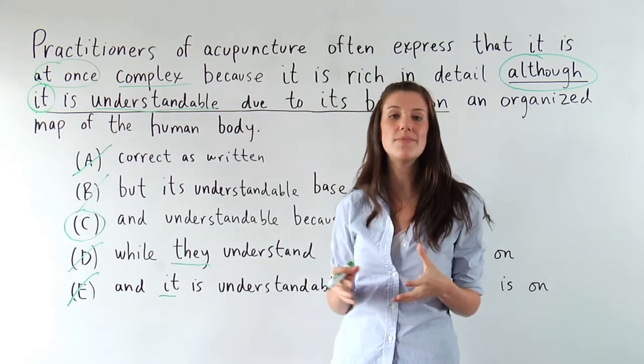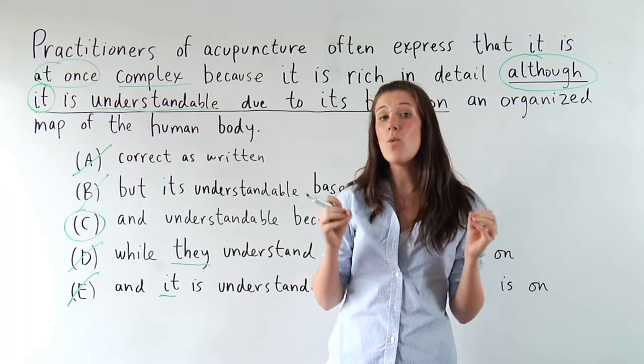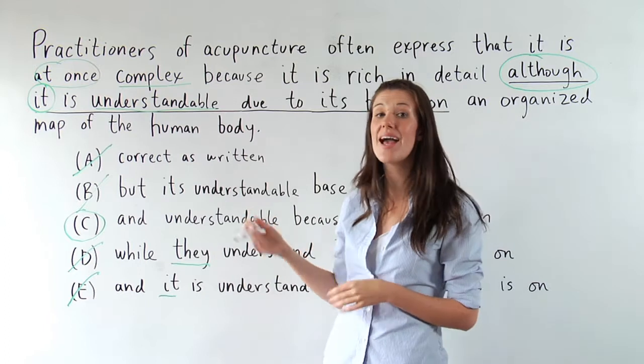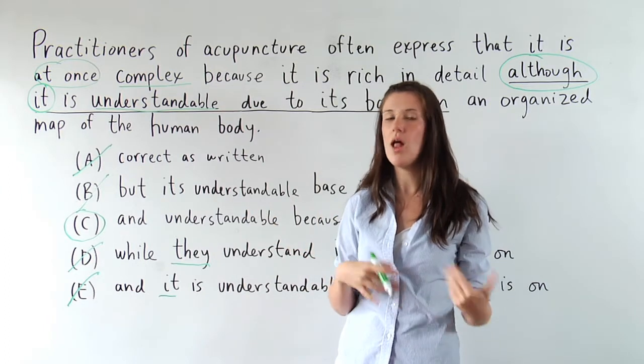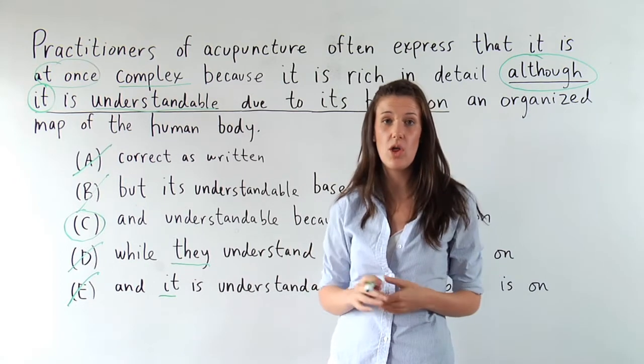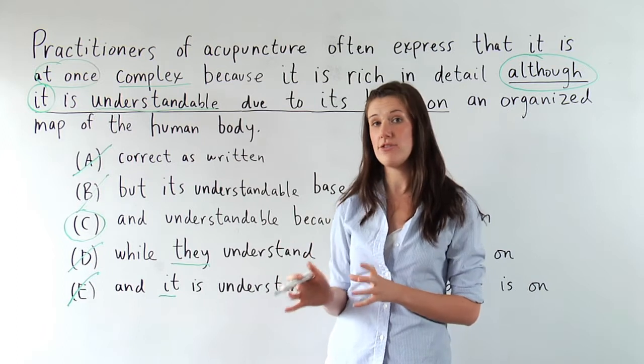So an idiom is something that's true in English just because that's how we say it. So idiomatically, at once goes with and. So we say it's at once complex and understandable. Not it's at once complex but understandable or at once complex while understandable. We can only say it's at once complex and understandable.